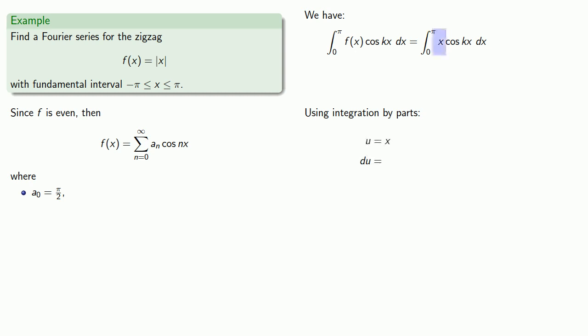We'll let u equals x, dv equals cosine kx. And that gives us, completing the integration by parts, and evaluating. And so we'll drop this into our formula for aₖ.